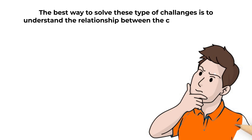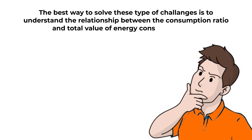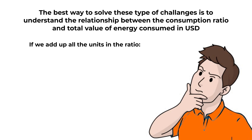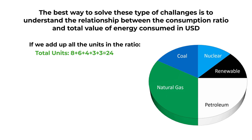The best way to solve these types of challenges is to understand the relationship between the consumption ratio and the total value of energy consumed in US dollars. If we add up all the units in the ratio, we get a sum of 24, because 8 + 6 + 4 + 3 + 3 = 24.